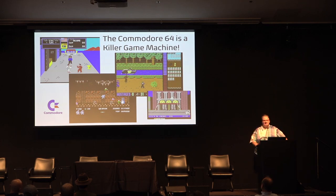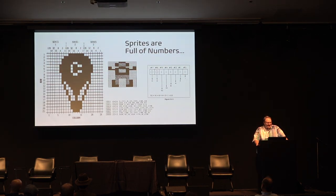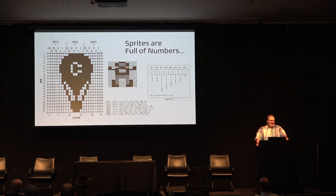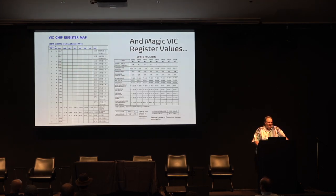Maybe when you first got your Commodore 64, you played games on it, had exposure to those graphics, and thought, I want to do some of those. As a young teenager you'd realize sprites are hard — there's all these numbers, binary arithmetic. Where's the 'move the alien around' command? It didn't exist. You had to know a lot of stuff about special registers and how they affected sprites. Programming them was kind of difficult.